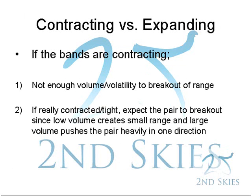Contracting versus expanding — very important to understand these two key environments for Bollinger Bands. If they're contracting, there isn't enough volume or volatility to push the pair in one particular direction, so we should probably be trading reversal or range-bound strategies. If they get really tight or contracted, that means there's very low volume, and we can expect a breakout to happen, because when huge amounts of capital come in, they overwhelm the other side and heavily push the pair in one particular direction.